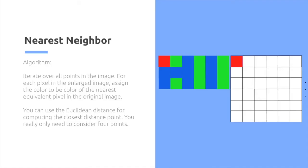So nearest neighbor. The algorithm is pretty simple. Iterate over all points in the image. For each pixel in the large image, assign the color to be the color of the nearest equivalent pixel in the original image. You can use the Euclidean distance for computing the closest distance point. You really only need to consider four points, which is the top, left, right, and bottom.